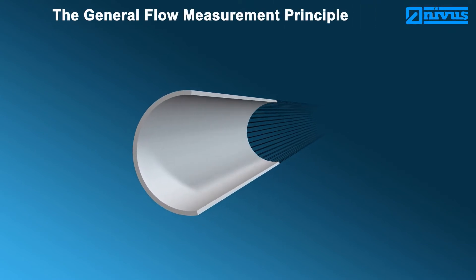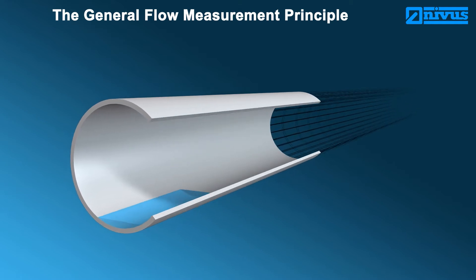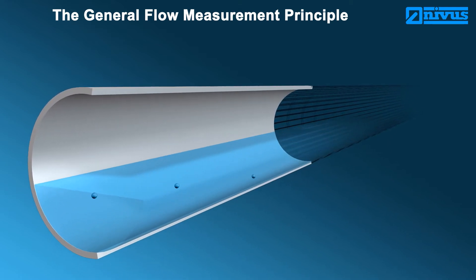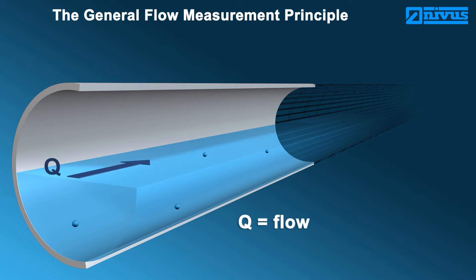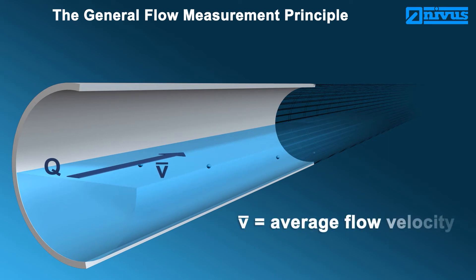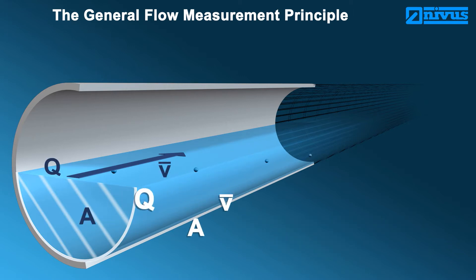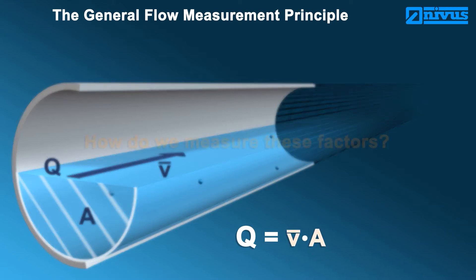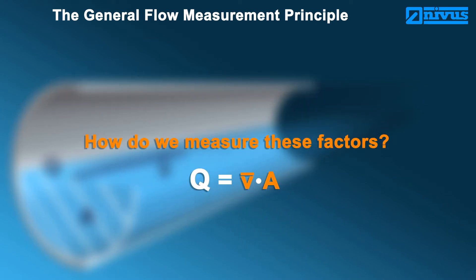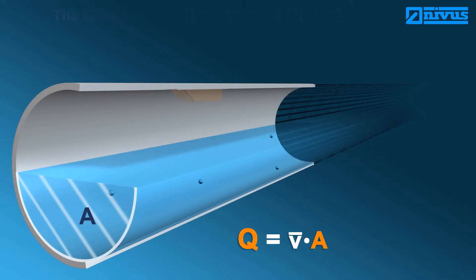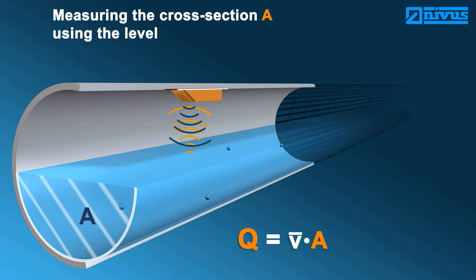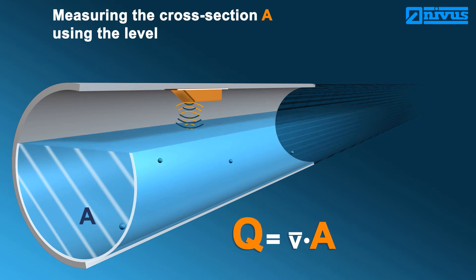The flow measurement principle. Flow cannot be measured directly. There are various factors required to detect the flow Q, such as the average flow velocity and the flow cross-section. From this, the general formula is obtained: Q equals V average times A. The flow cross-section A is determined by continuously measuring the level in consideration of the channel shape. If the level changes, the flow cross-section will change accordingly, and hence flow will change as well.